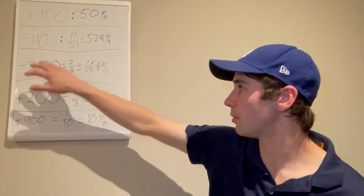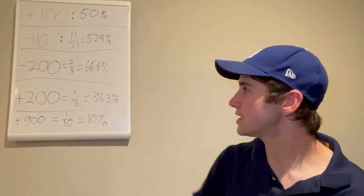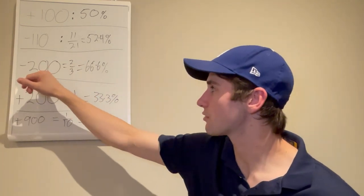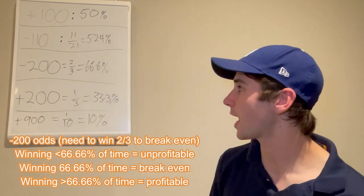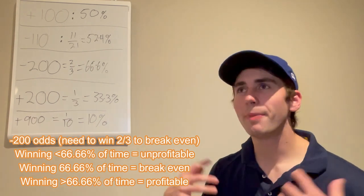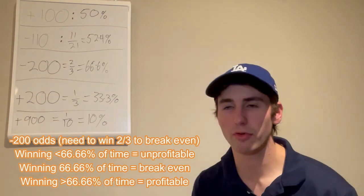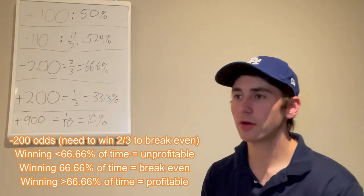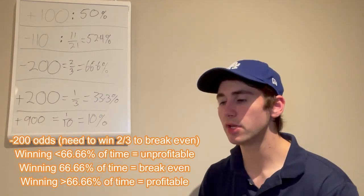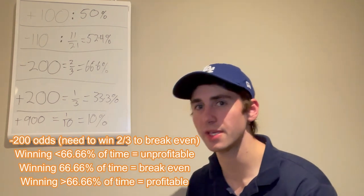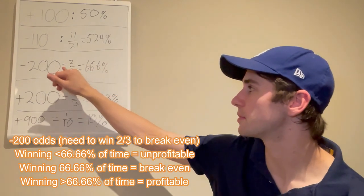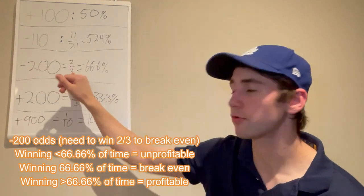Next example: minus 200 odds. You can see a formula kind of emerge — minus 200, you have to win two thirds of the time; minus 300 odds, you have to win three out of four times. At minus 200 odds, if your unit size is $100, you're betting $100 to profit $50. So for every loss you have, you have to have two additional wins — you have to win two thirds, or 66.6%, of the time to break even.